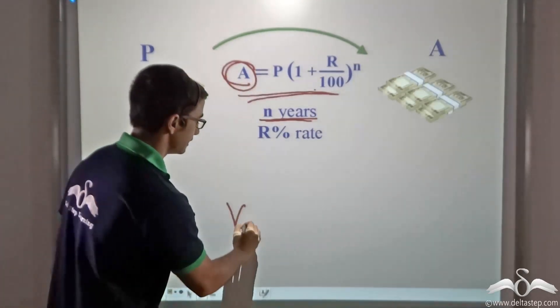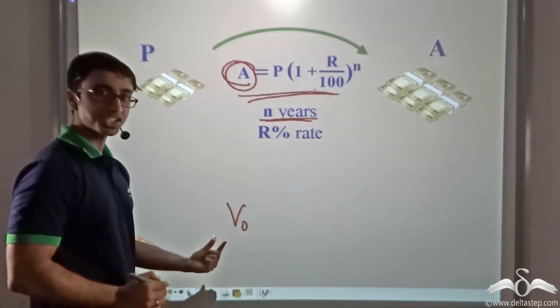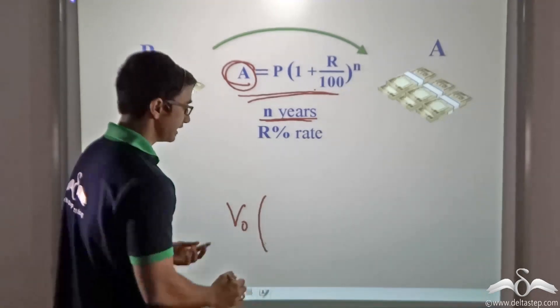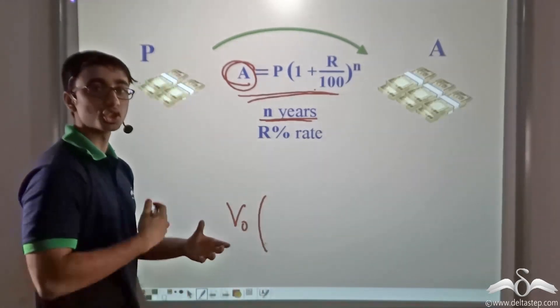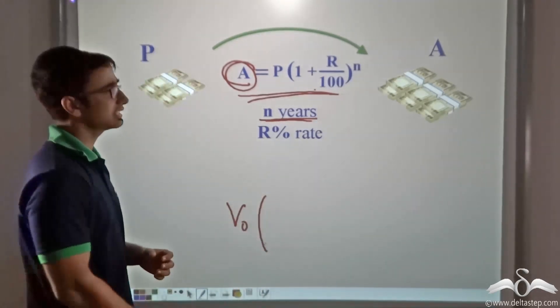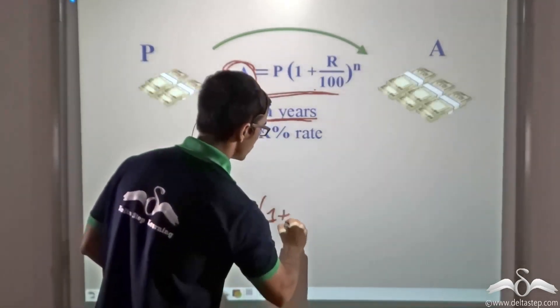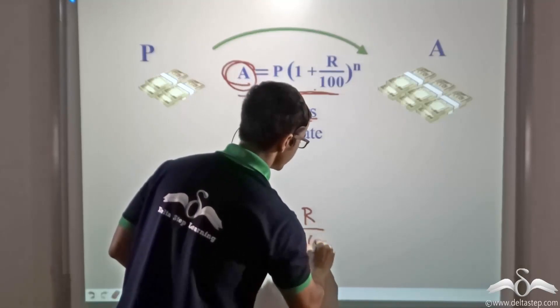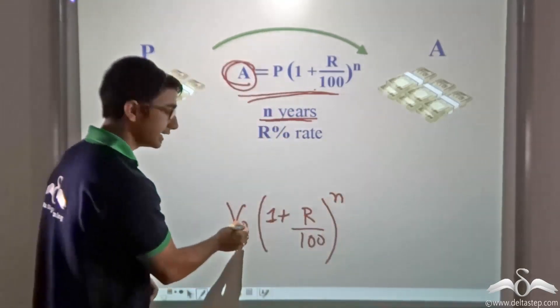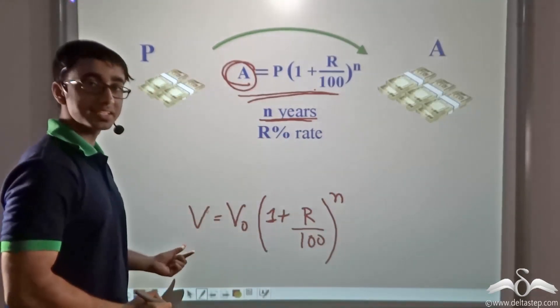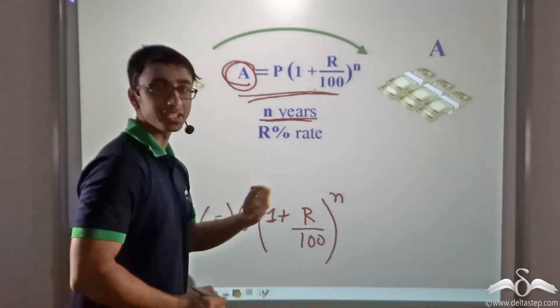We write, let's say that the value initially of the particular land is V0. If the value of this land is growing at a certain rate, let's say at R percent, then I can write 1 plus R by 100 whole to the power of N into V0 will be equal to V, where V is the value of land after N years.